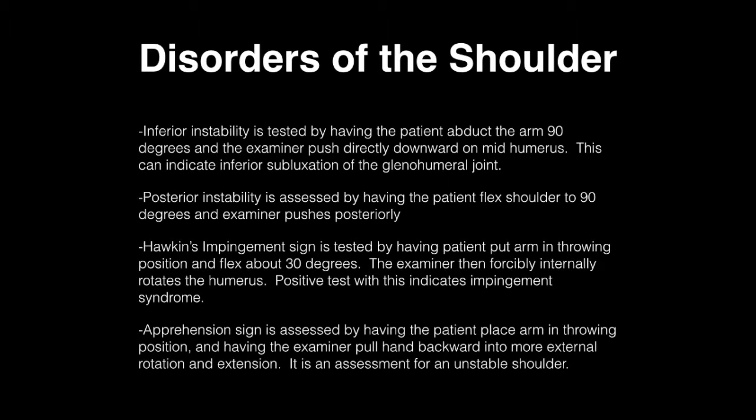Inferior instability is tested by having the patient abduct the arm to 90 degrees while the examiner pushes directly downward to the mid-humerus. This can indicate inferior subluxation of the glenohumeral joint. Posterior instability is assessed by having the patient flex the shoulder to 90 degrees and having the examiner push posteriorly. Hawkins is another impingement test, performed by having the patient put their arm in a throwing position and flex about 30 degrees, then the examiner forcibly internally rotates the humerus. A positive test indicates impingement syndrome.